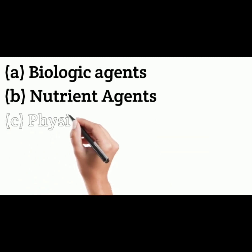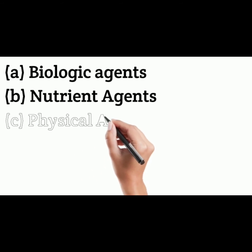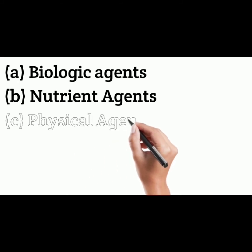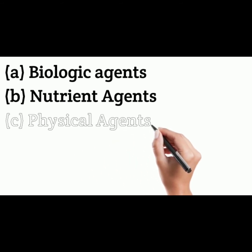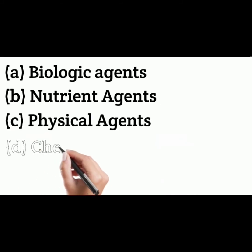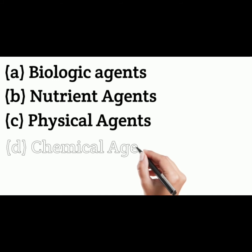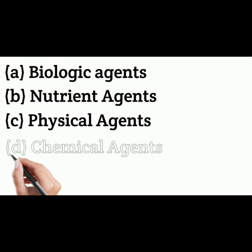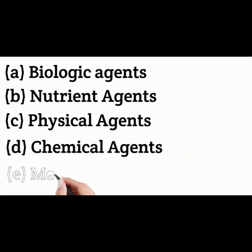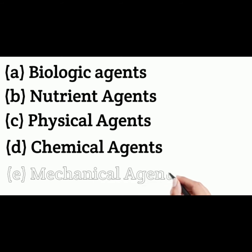Third is physical agent, which includes heat, cold, pressure, radiation, electricity, etc. Fourth is chemical agent, which may include metals, fumes, gases, etc. Fifth is mechanical agent — chronic friction and other mechanical forces may cause trauma, injuries and fractures.